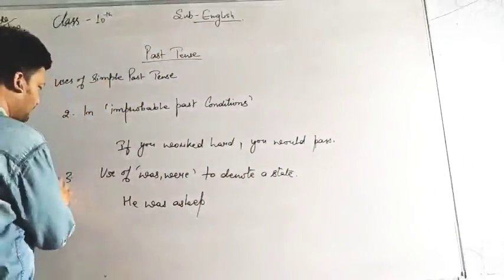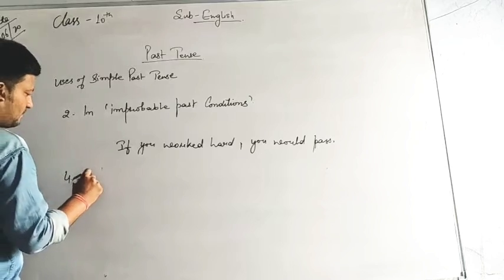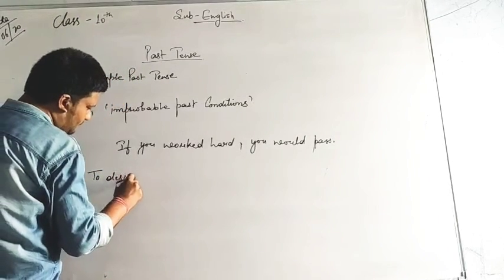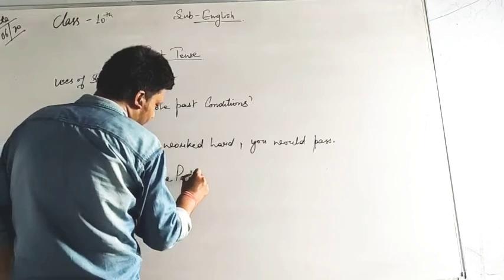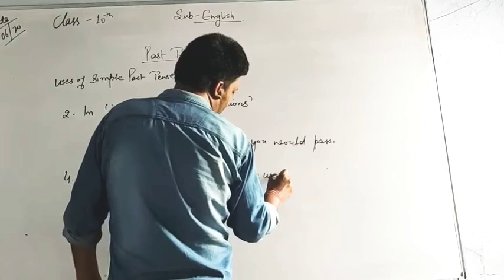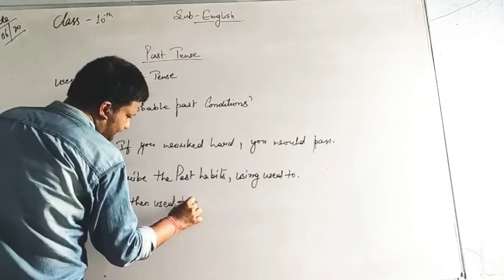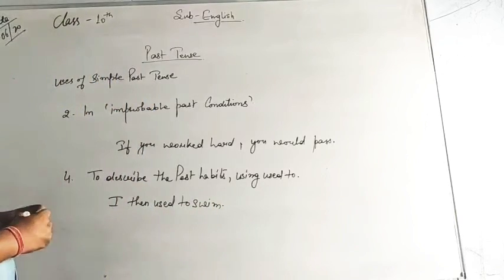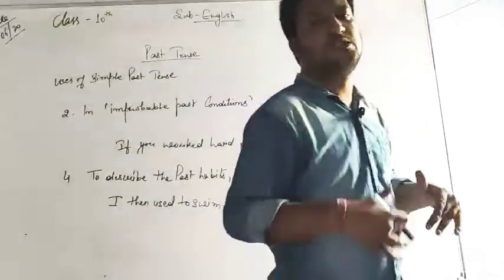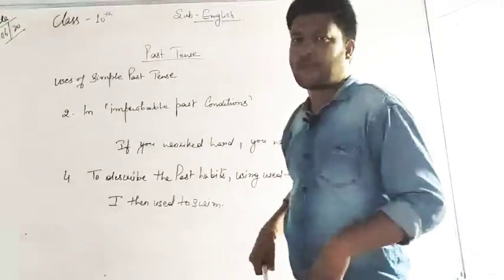The fourth and last use is to describe past habits using 'used to.' For example: 'I then used to swim.' When using 'used to,' it means I am talking about a past habit — not present. In the past, at that particular time, I used to swim. It is no longer a current habit, just a past one.